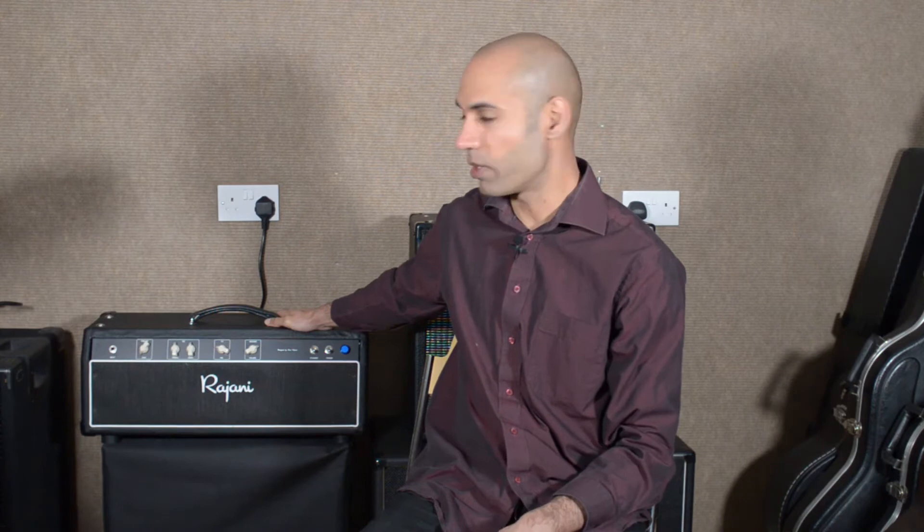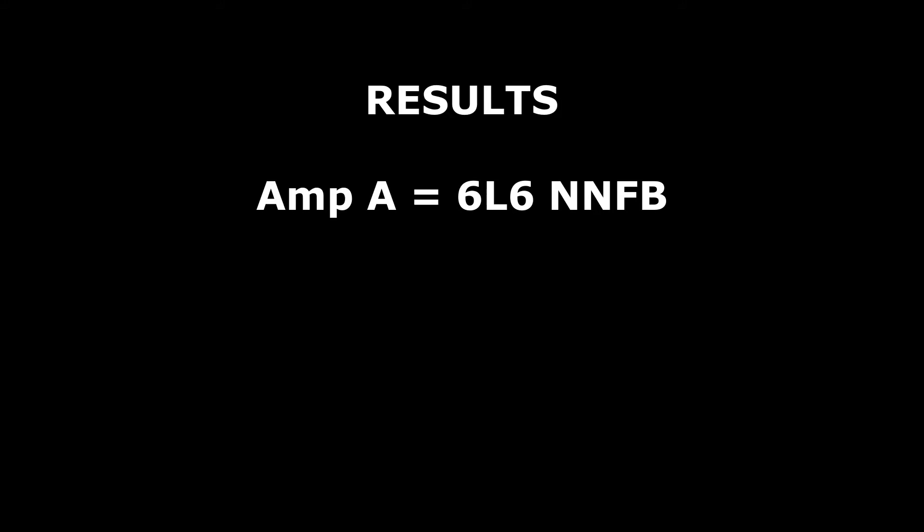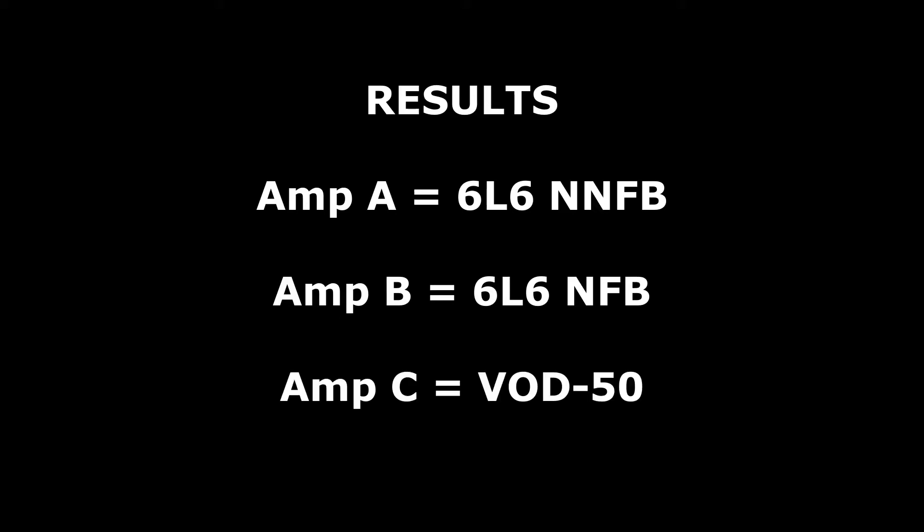In our previous video we compared the VOD50's power amp to a 6L6 power amp — in fact it was one 6L6 power amp with a negative feedback switch, and it was the power amp in the amp behind me. Here are the results: Amp A was the 6L6 amp without negative feedback, Amp B was the 6L6 amp with negative feedback, and Amp C was the VOD50.